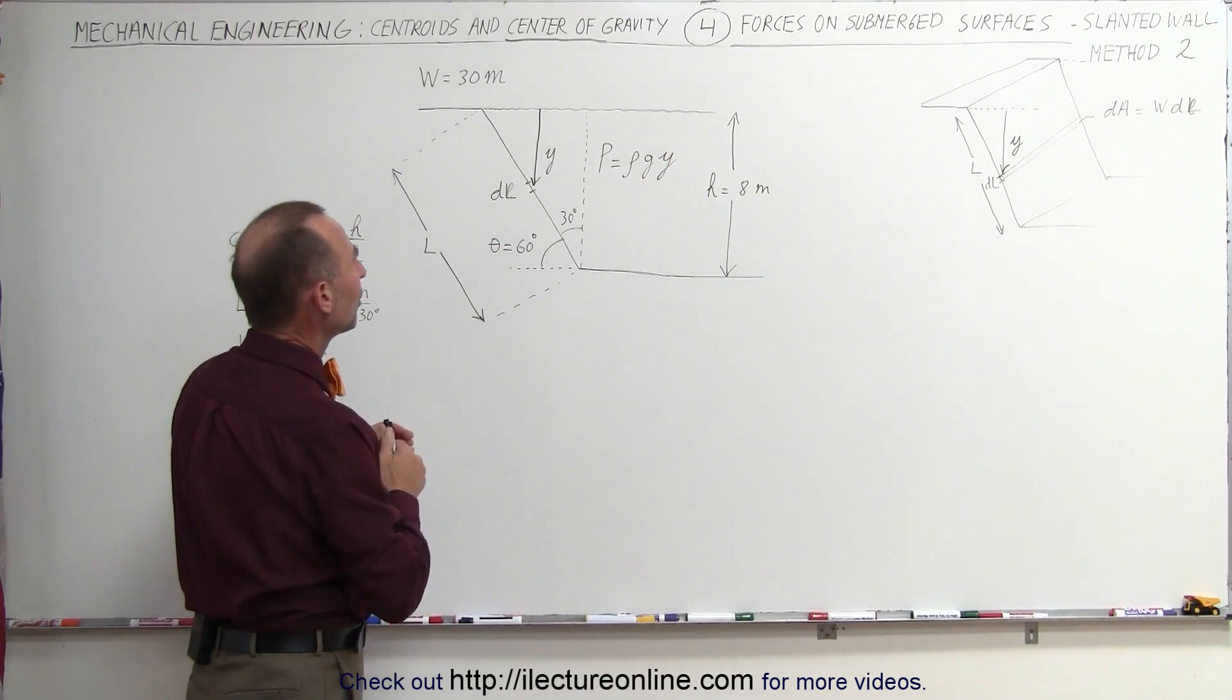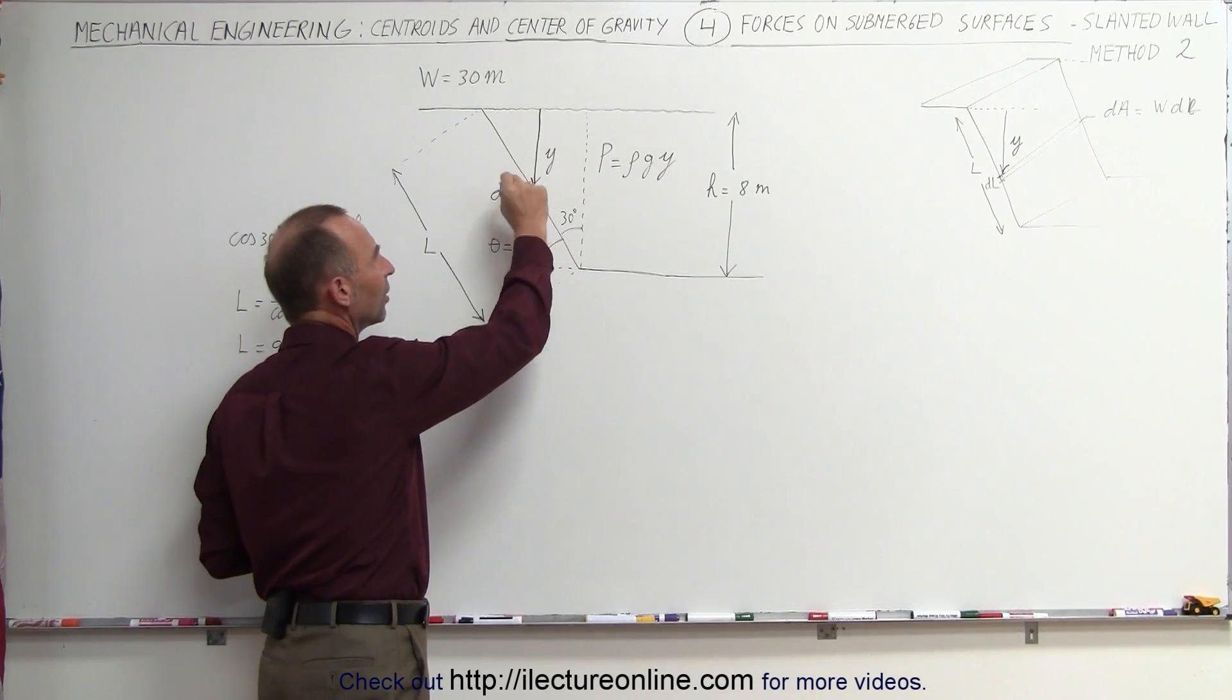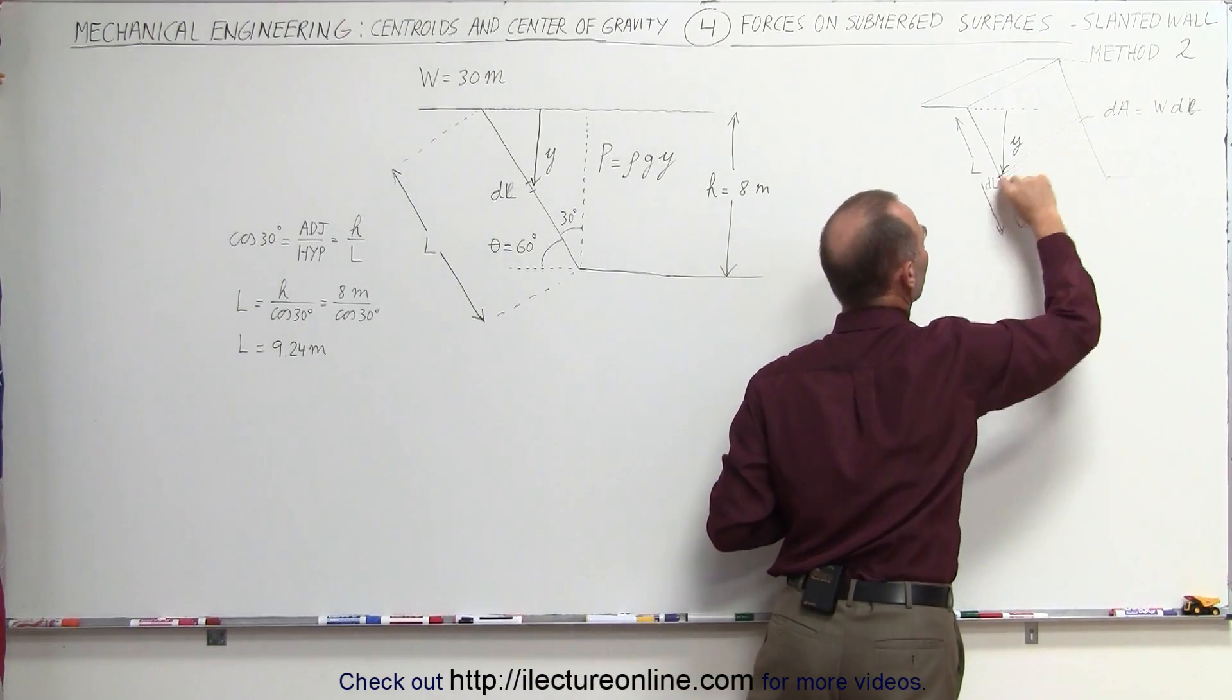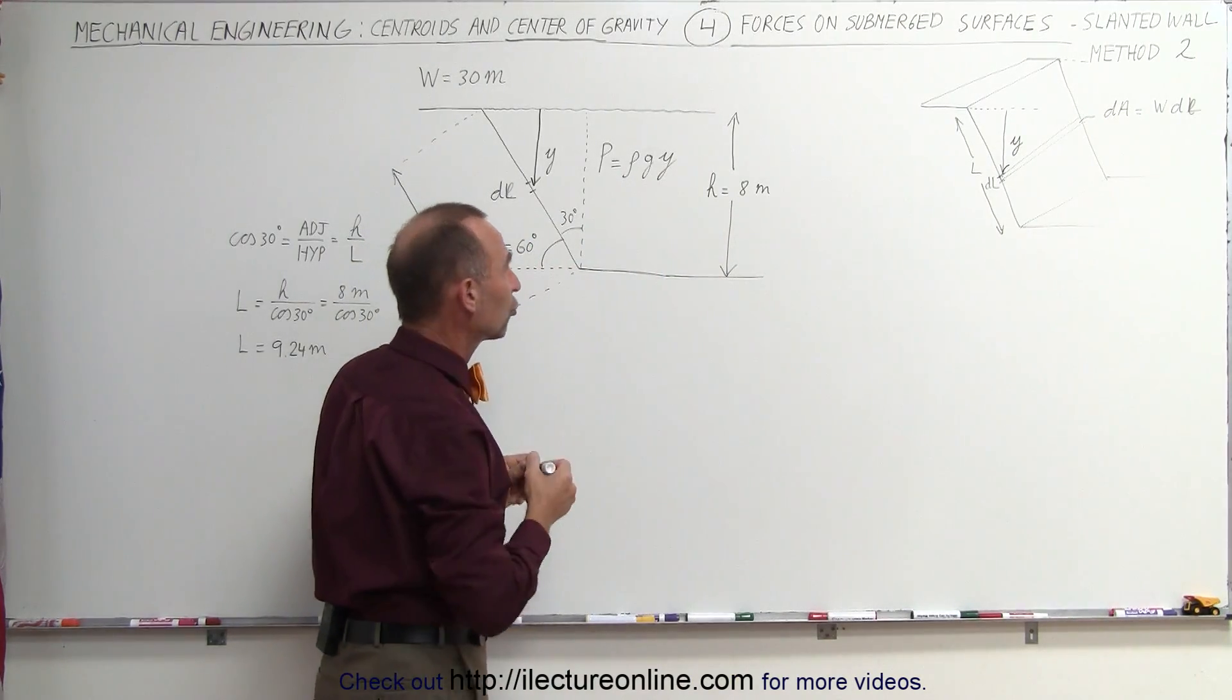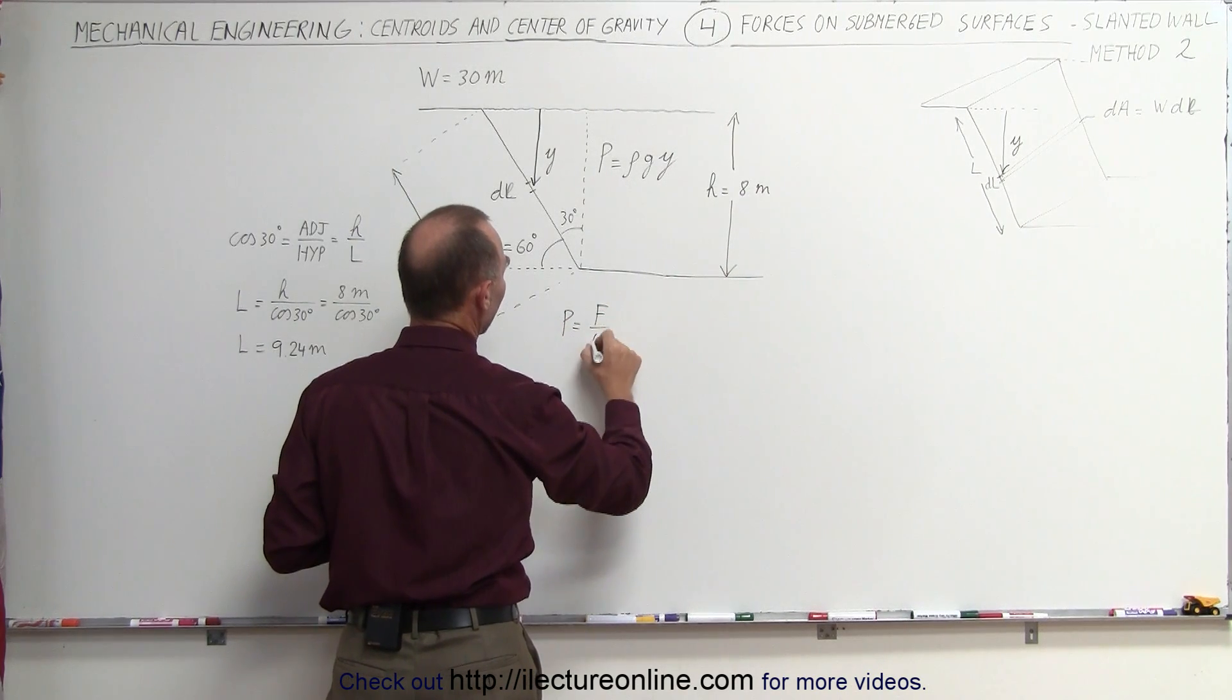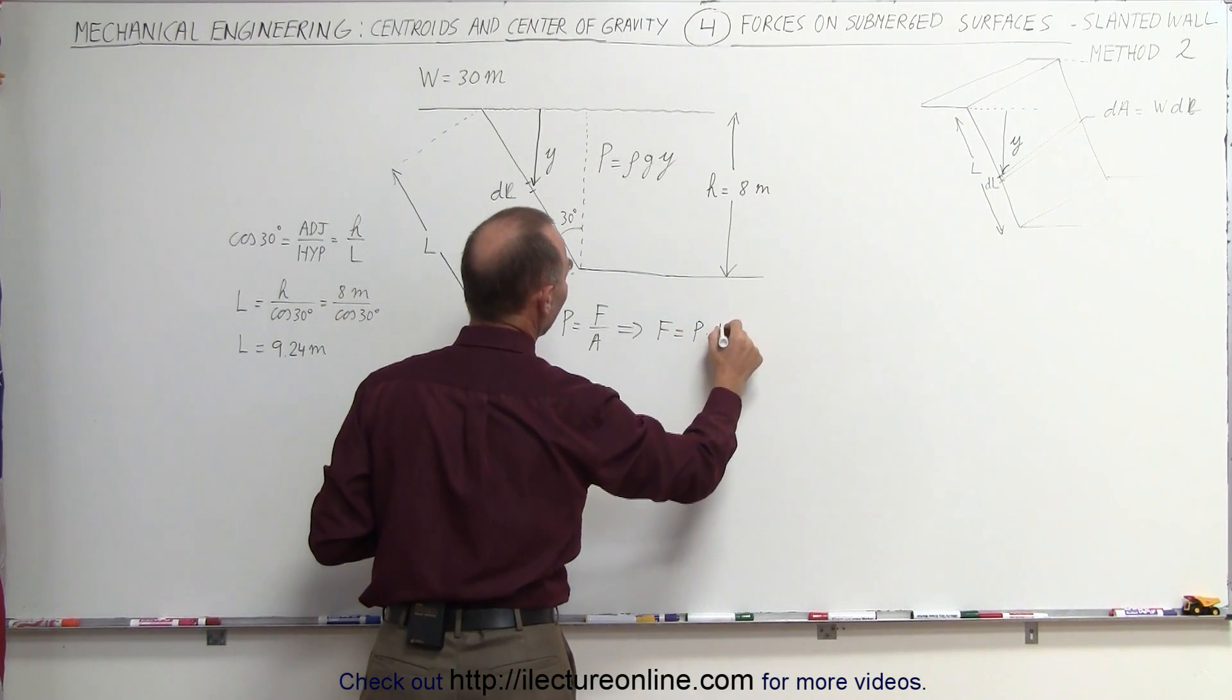So if the pressure at that point is rho g y, then we can calculate the force on that small little strip. If we look over here, this is the slanted portion of the dam. Here's our small little dl, and we have that strip here. So we can actually calculate the force acting on that strip. The force, or we can say that the pressure by definition is equal to force divided by area, which means that the force is equal to the pressure times the area.